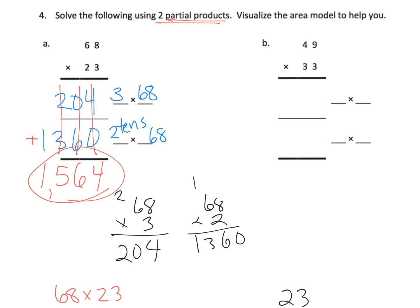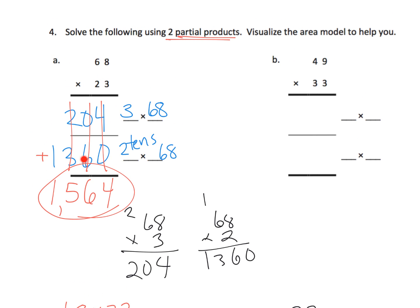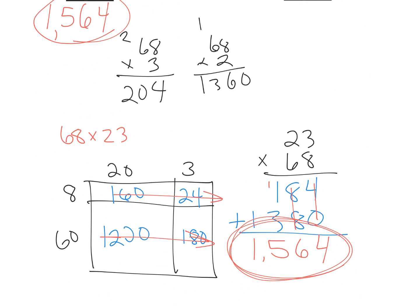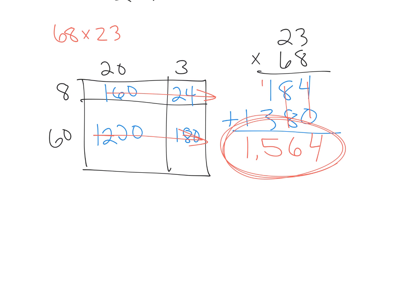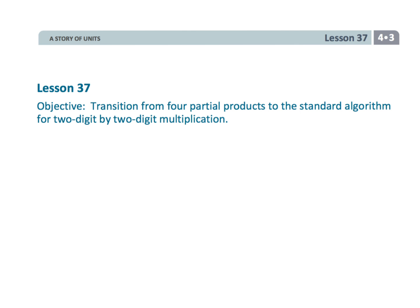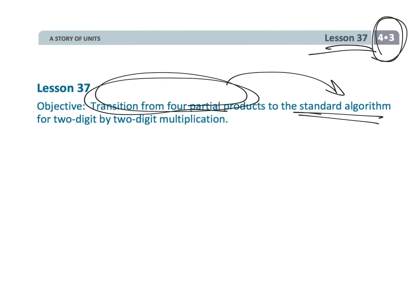So you have a choice. You can try and do right here what they were aiming for. Or you can go down here and just do the partial products using four partial products. At this point, it's okay for our fourth graders to choose either method. And that wraps up fourth grade module 3, lesson 37. We're trying to transition from the four partial product area model to that standard algorithm.